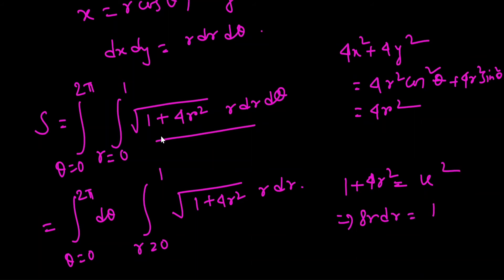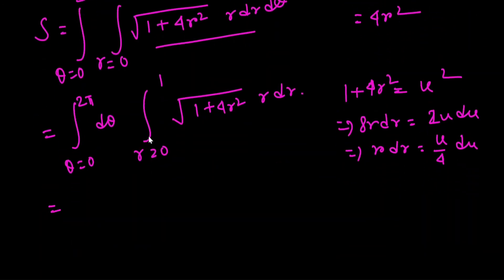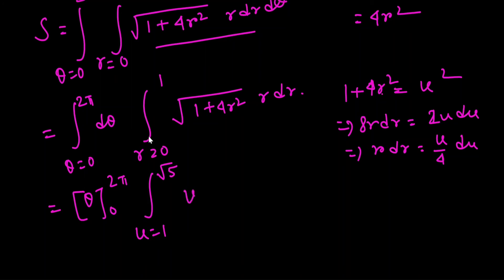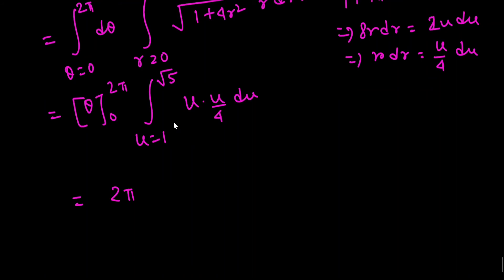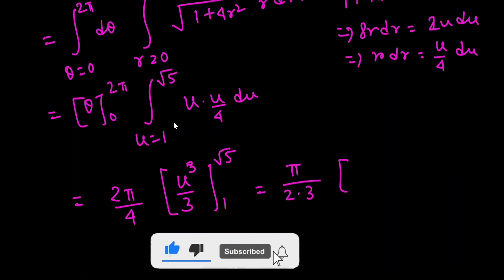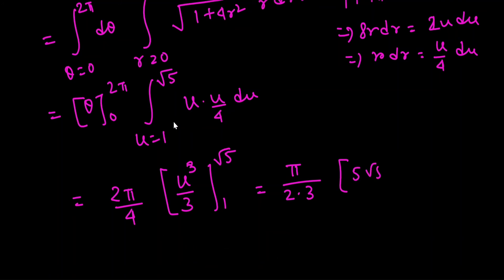With u = 1 + 4r², we get du = 8r dr, so r dr = du/4. When r = 0, u = 1; when r = 1, u = 5, so √u goes to √5. The θ integral gives 2π. The integral becomes (2π/4) · ∫₁^√5 √u du = (π/2) · [u^(3/2)/(3/2)] from 1 to √5 = (π/2) · (2/3) · [5√5 − 1] = (π/6)(5√5 − 1).